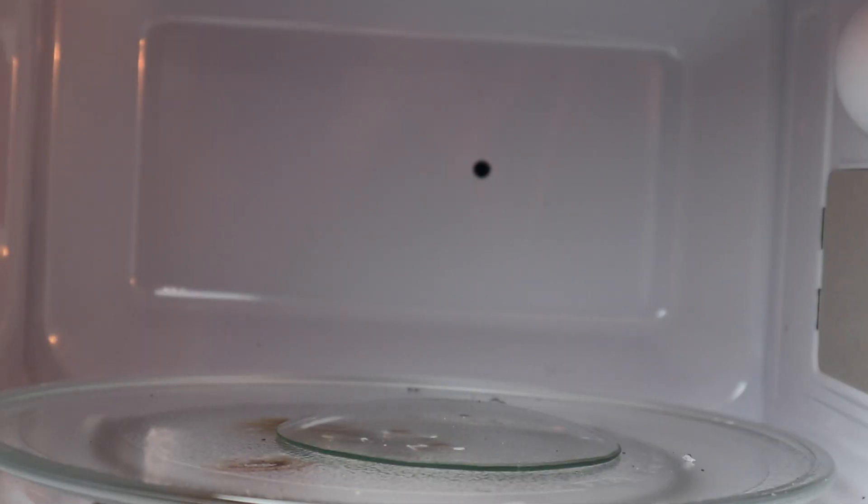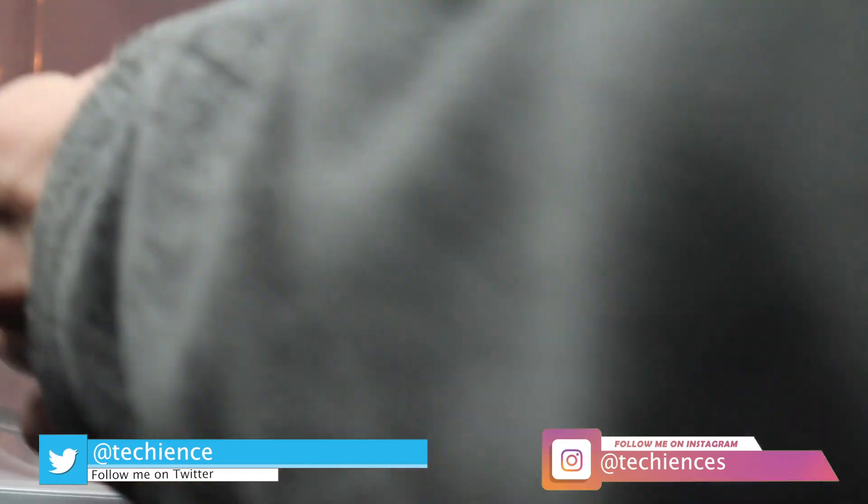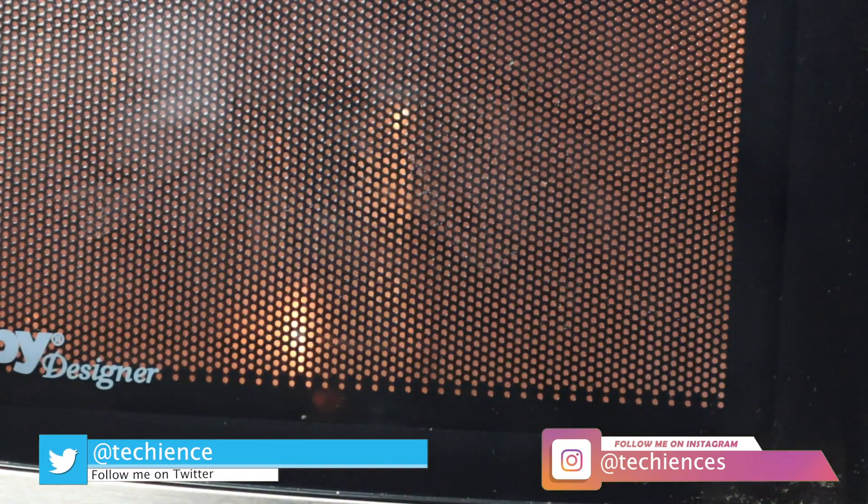The colors of plasma that I want to make are yellow, blue, purple, and red. I'm gonna start by making yellow because it should be the easiest to make. All I have to do is put a few matches inside the microwave and start it.